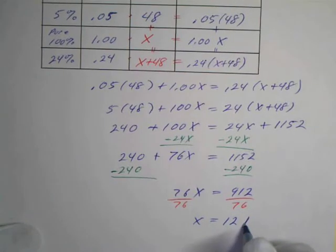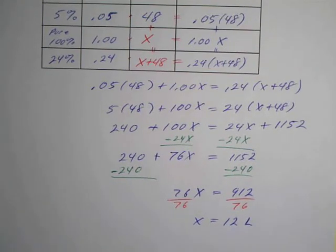So it's going to be 12 liters is how much I want to add. How much pure sulfuric acid should be added to make a solution that is 24% pure sulfuric acid? 12.